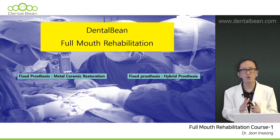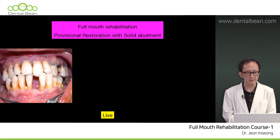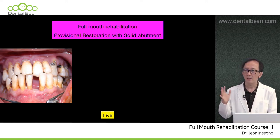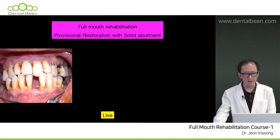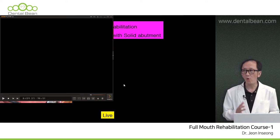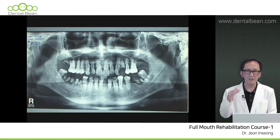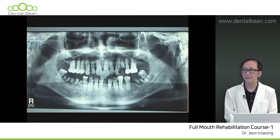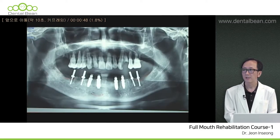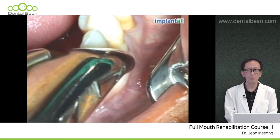I will cover this full mouth rehabilitation course over 11 sessions, and I'm sure it will be helpful to everyone. Before starting my real presentation, I want to briefly review several cases. This patient is a 48-year-old male with severe periodontitis. I started surgery with whole teeth extraction and immediate placement of upper eight implants and lower eight implants.